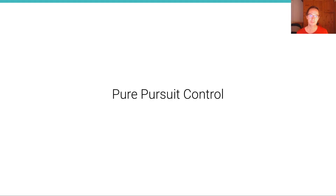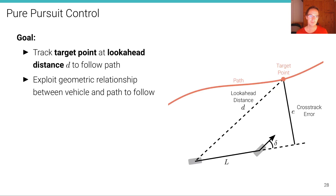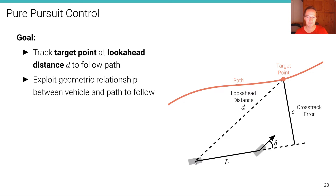Let's first talk about pure pursuit controllers. The pure pursuit controller is a specific type of vehicle controller. The goal of a pure pursuit controller is to track a target point — shown here in red — at a certain look-ahead distance D, indicated by the dashed line, in order to follow a path. In this case, the look-ahead distance is defined as the distance between the target point and the center of the rear axle.